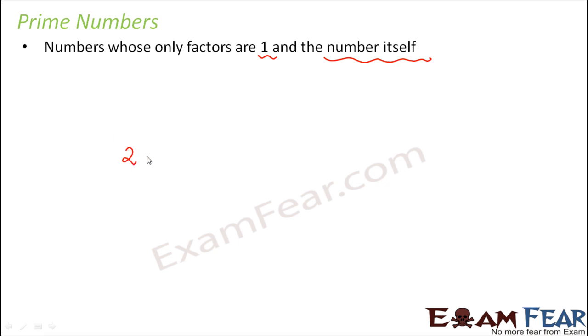Think of 2. If I ask you to write down the factors for 2, 2 can be written as 1 into 2 and 2 into 1. So basically it has two factors, 1 and 2. So 1 and the number itself. So 2 is a prime number.